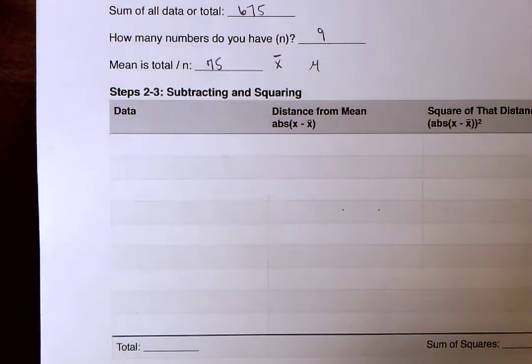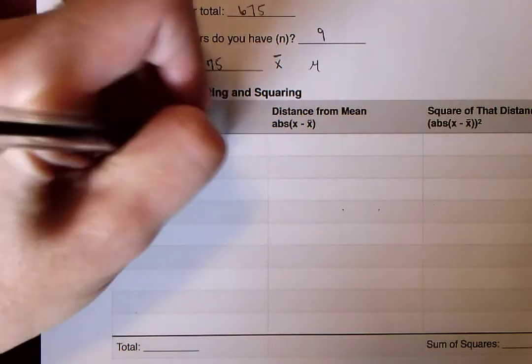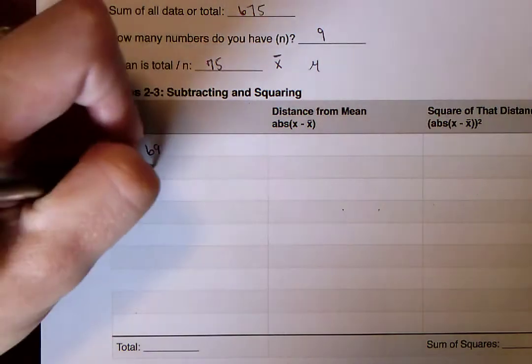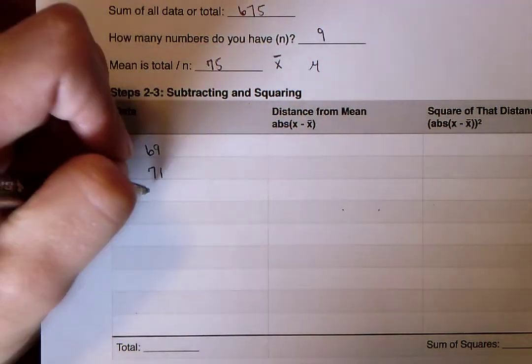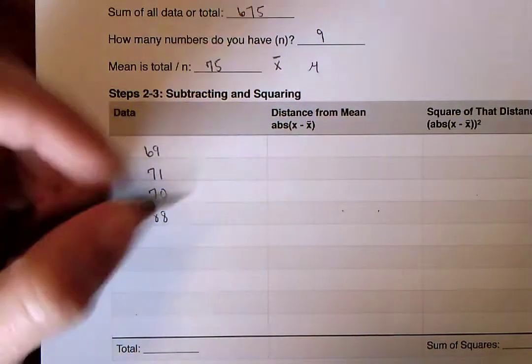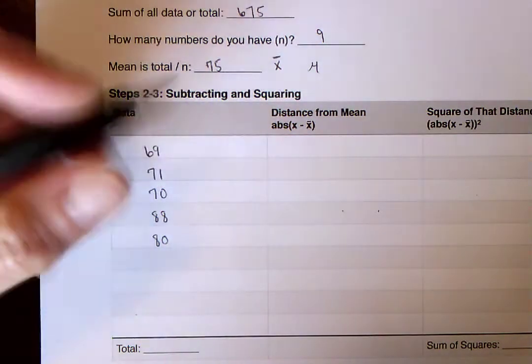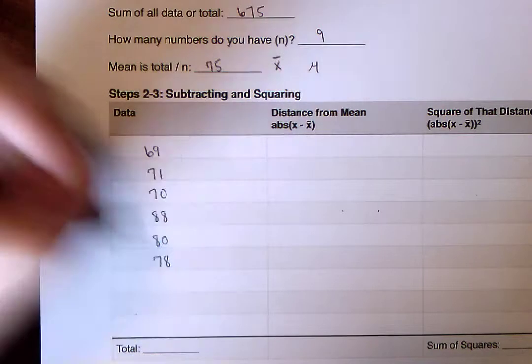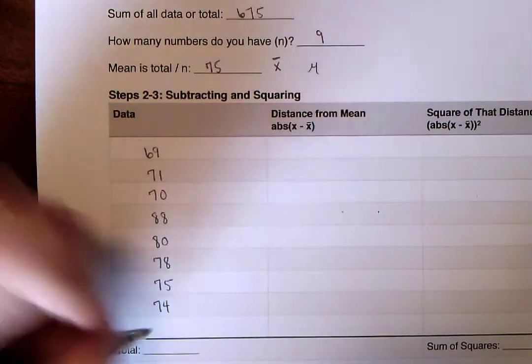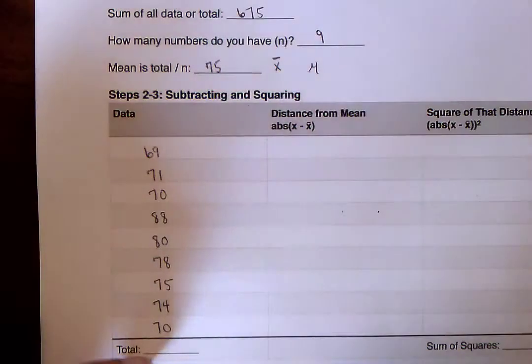So what we're going to end up doing here is writing in each of our things. So let's write in 69, 71, 70, 88, 80, 78, 75, 74, and 70. Those are all of our numbers.